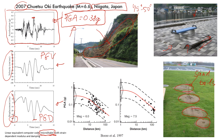Let's say that this record was from the epicenter, and from the epicenter we know that peak ground acceleration was 0.38 g's. So now what we can do is estimate what the peak ground acceleration was, for example, 50 kilometers away from the epicenter.